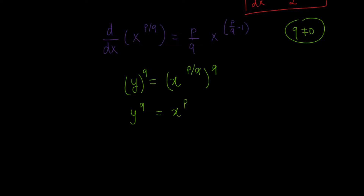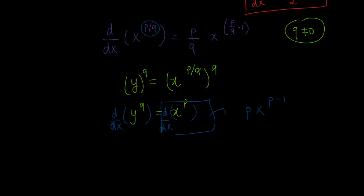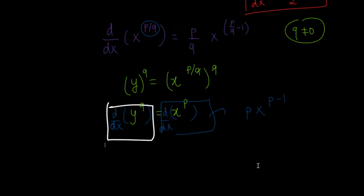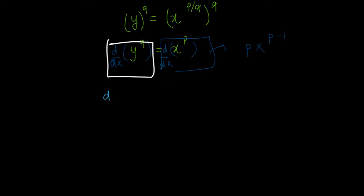Now let's differentiate both sides with respect to x. So d over dx of y to the power of q is equal to d over dx of x to the power of p. The right-hand side is straightforward: since p is an integer, this is p times x to the power of p minus 1. On the left-hand side, using the chain rule, we have d over dy of y to the power of q times dy over dx. Since q is an integer, this gives q times y to the power of q minus 1 times dy over dx.